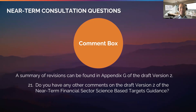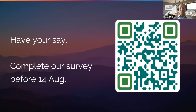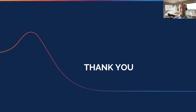For additional comments on the draft near-term guidance version 2, a summary of revisions can be found in Appendix G. In terms of next steps, the draft near-term guidance version 2 is currently undergoing a 60-day public consultation period until August 14. Following a review and integration of the feedback, the final version will be published in Q3 or Q4 this year and will be available to be used for target setting immediately after publication. It will then become the compulsory near-term FI target framework six months after publication of the final version 2. We welcome your feedback on the proposed revisions in the consultation survey, which is open now until August 14. The QR code provided on the slide can be scanned to access the survey. Thank you for listening and we look forward to your participation in the consultation survey.